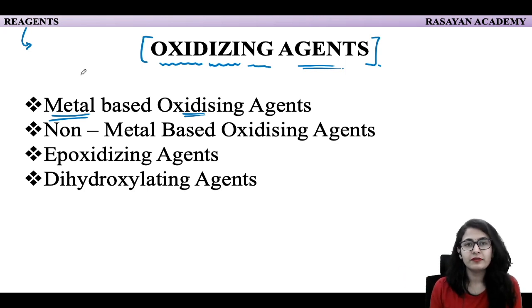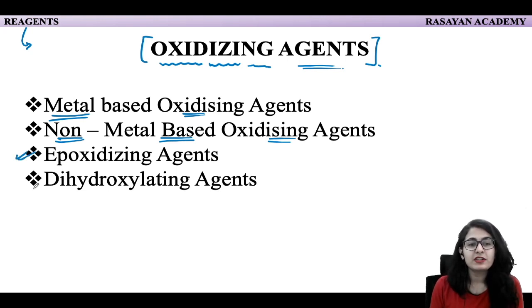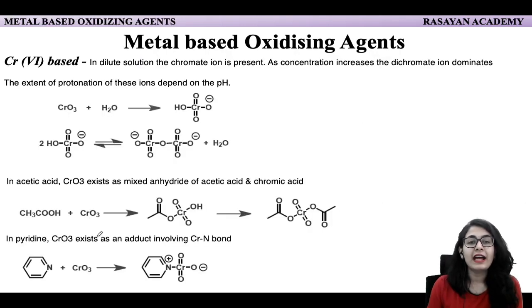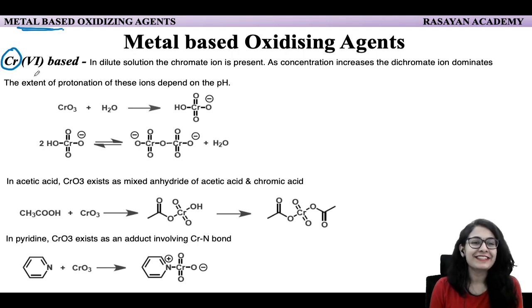For the first categorization — oxidizing agents — we will talk about metal-based oxidizing agents: chromium, manganese, silver, lead. Then non-metal-based oxidizing agents, for example selenium oxide, Moffatt oxidation, Swern oxidation, DMSO, and so on. Then epoxidizing agents and dihydroxylating agents. All of these are covered under oxidizing agents. Today in this session, we are talking about chromium-based oxidizing agents. You will see how long the session goes and you will have learned only the chromium-based ones, because there are many.